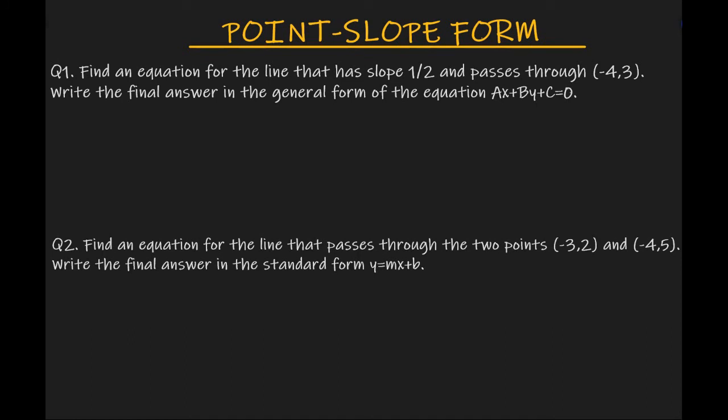Welcome everyone! In this video we will talk about how to find a line using the point-slope form. The point-slope form is extremely useful since it allows us to find an equation for a line if we know its slope and the coordinates of a point on the line, or even if we know the coordinates of two points on the line.